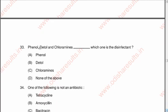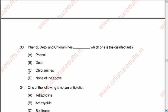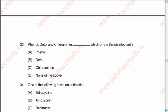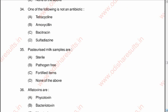Question 33: Phenol, Dettol, and chloramines — which one is the disinfectant? A phenol, B Dettol, C chloramines, D none of the above. The correct option is C, chloramines. Question 34: Which of the following is not an antibiotic? A tetracycline, B amoxicillin, C bacitracin, D sulfadiazine. The correct answer is D, sulfadiazine.